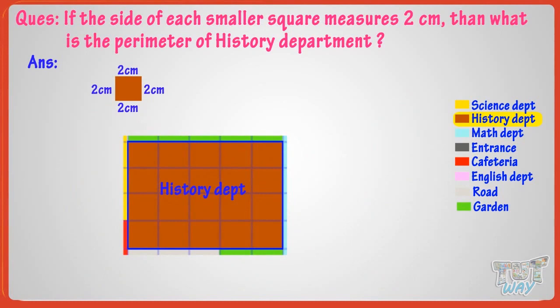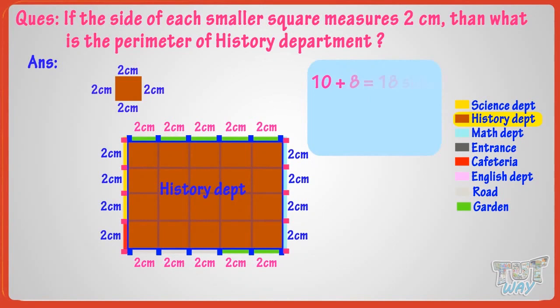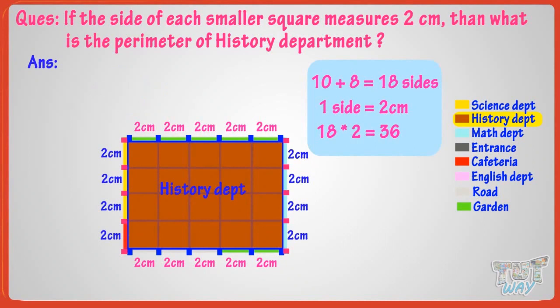Now, count the number of sides of square to make up the boundary of history department. History department spans 5 columns. So 5 sides are facing on top, and 5 sides are facing on the bottom, that is 10 sides. It has 4 rows. So 4 sides are facing on left, and 4 sides facing on the right, that is 8 sides. So in total 18 sides are facing on the boundary of history department. And one side measures 2 centimeters. So 18 multiplied by 2 equals 36. So 36 centimeters is the parameter of history department.